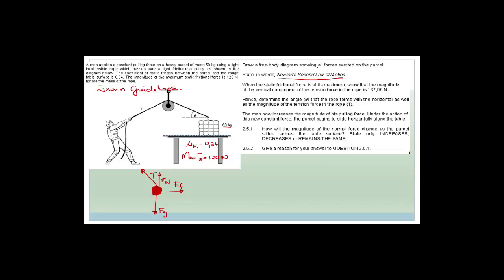Newton's second law: when a resultant force acts on an object, the object will accelerate with an acceleration that is directly proportional to the resultant force and inversely proportional to the mass of the object. If you just write F_net = ma, you won't get the marks — you need to state it in words.